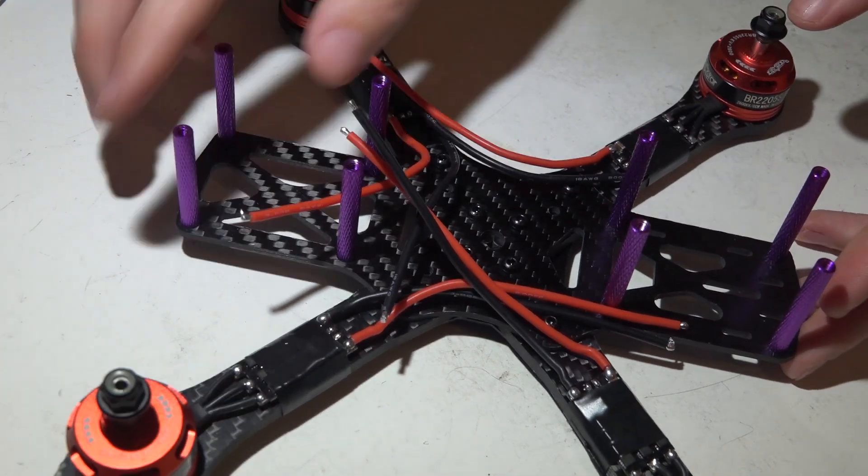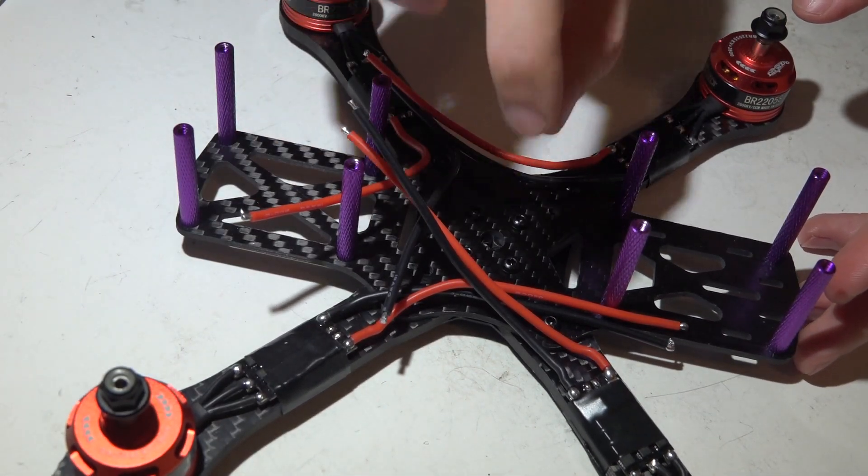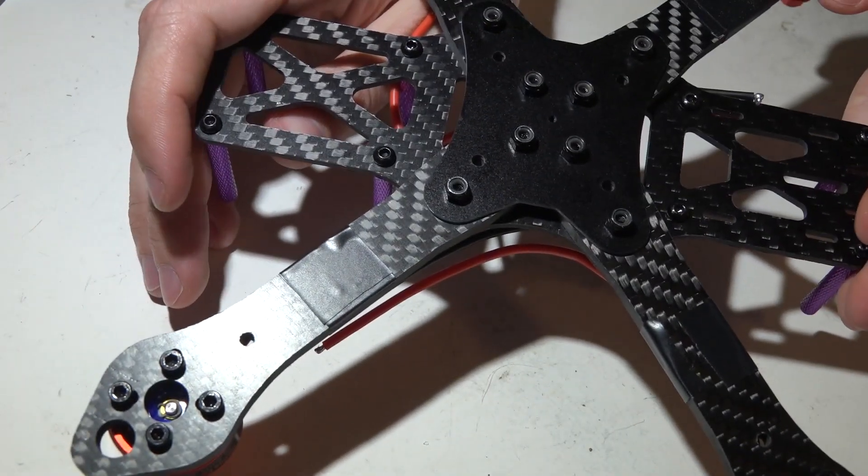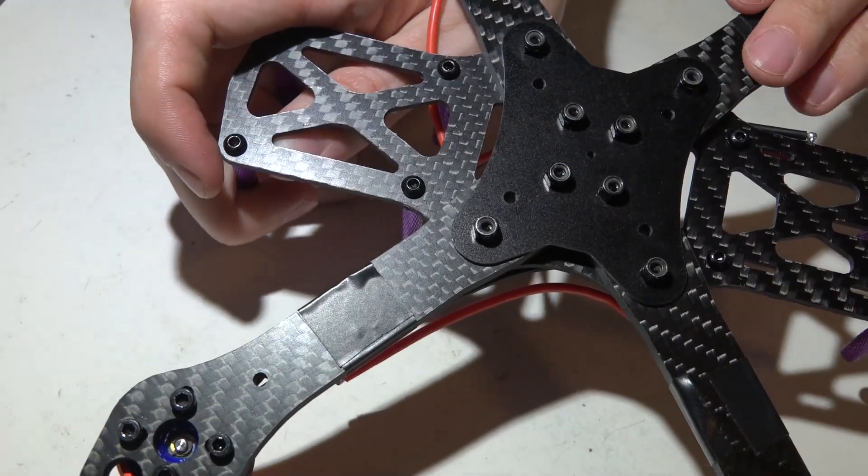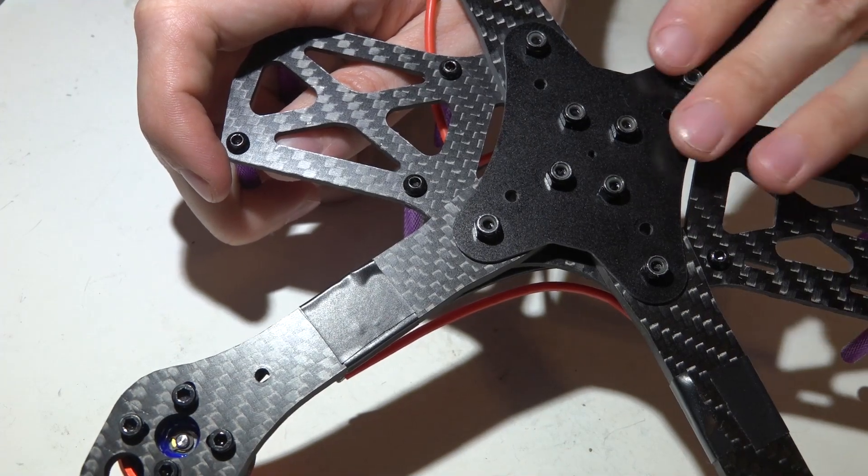Like I said in the last video, many of you told me that I mounted these arms on wrong. And like I said, I did that on purpose for good reason. Because if I ever break an arm, replacing the arm is going to be much easier with them on the bottom. Not only that, but I also did this because I am not using the PDB that comes supplied with this frame.